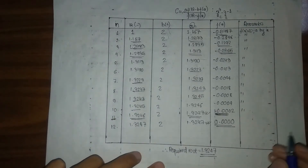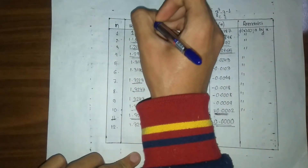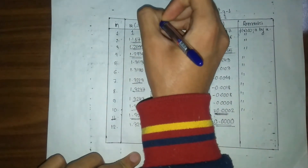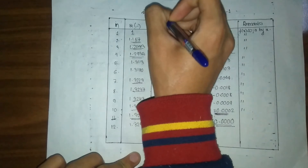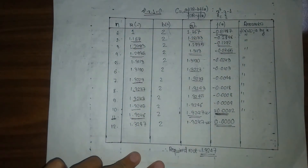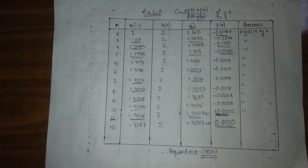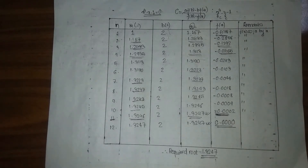In this way, by using the false position method, I found the root of the equation x cube minus x minus 1 equals 0 to be 1.3247. If you liked our video or if it was of any help to you, do subscribe to the channel, like the video, and if you have any queries do comment down below. Thank you.